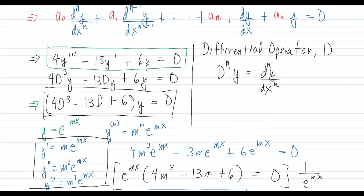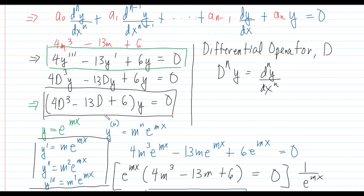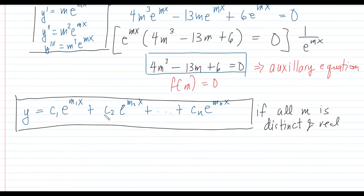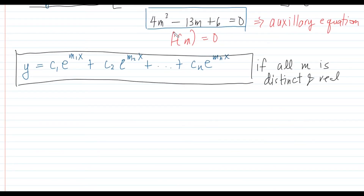In reality, even if you are given a regular differential equation in the form of derivatives of y with respect to x, you can also see by pattern that the auxiliary equation is 4m³ minus 13m plus 6. It's clearer when using differential operator notation. So let's continue solving for m: we have 4m³ minus 13m plus 6 equals 0.